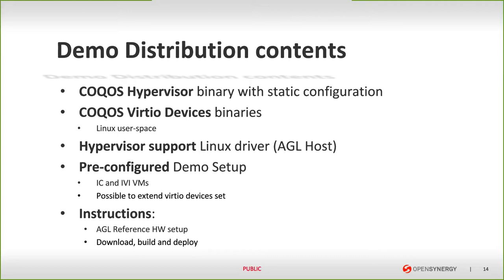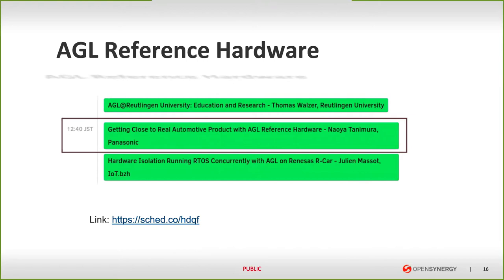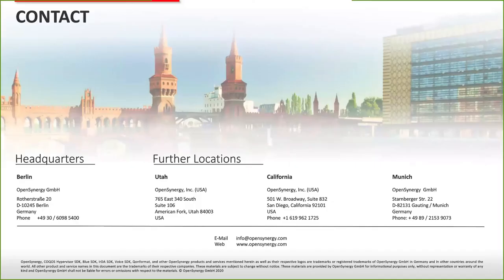How to obtain the demo distribution: if you are interested in getting the COCOS SDK for AGL, please contact OpenSynergy via our website opensynergy.com or via email at sales@opensynergy.com. Details of the implementation on AGL reference hardware will be in the session of Tenimura-san later today — a link is also at the bottom of the page. Thank you for joining me today for this session on how to obtain VIRTIO-enabled Virtualized AGL KK reference demo distribution by OpenSynergy. I will be happy to answer your questions.